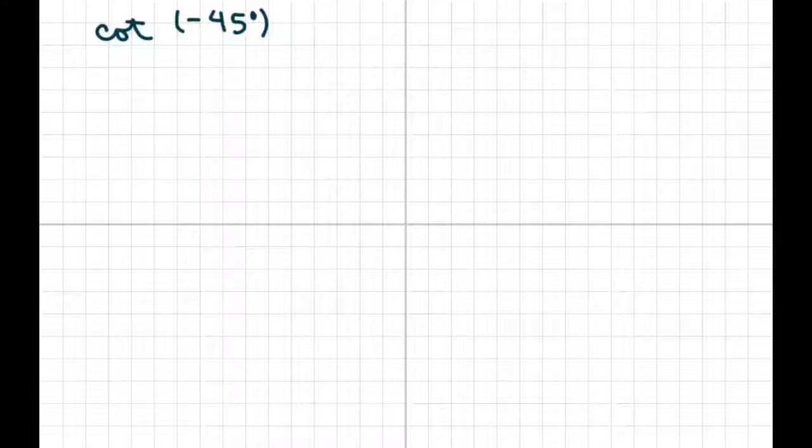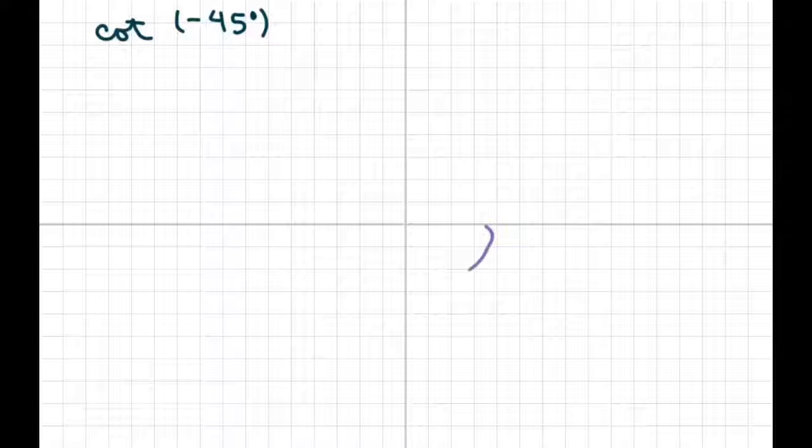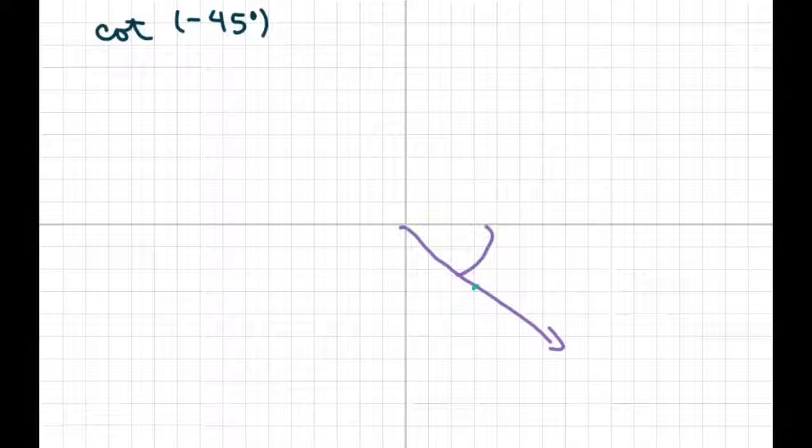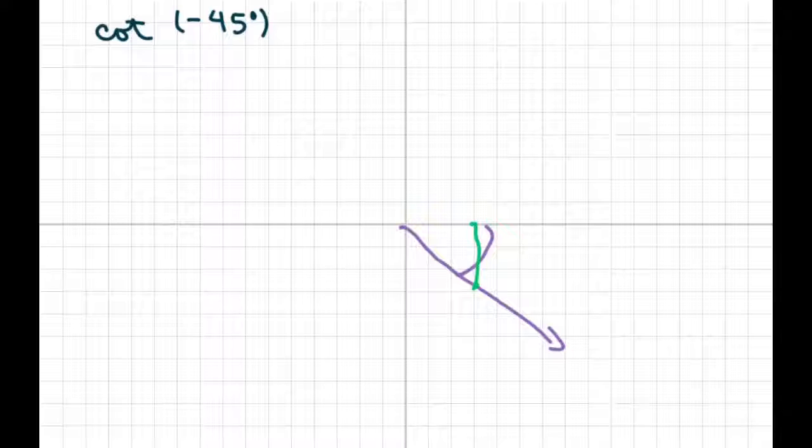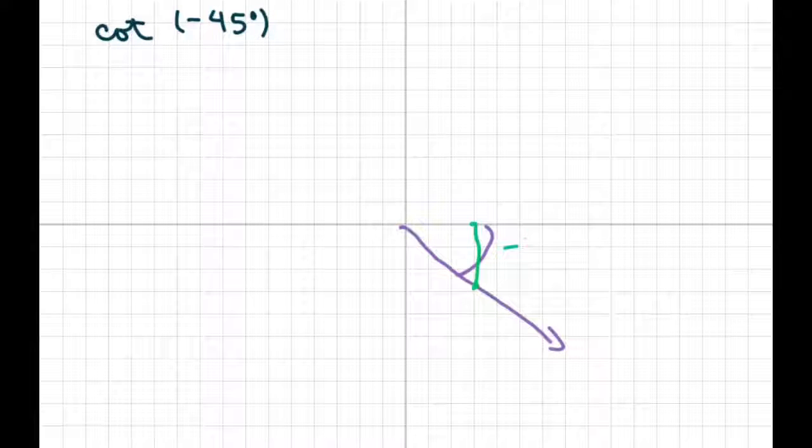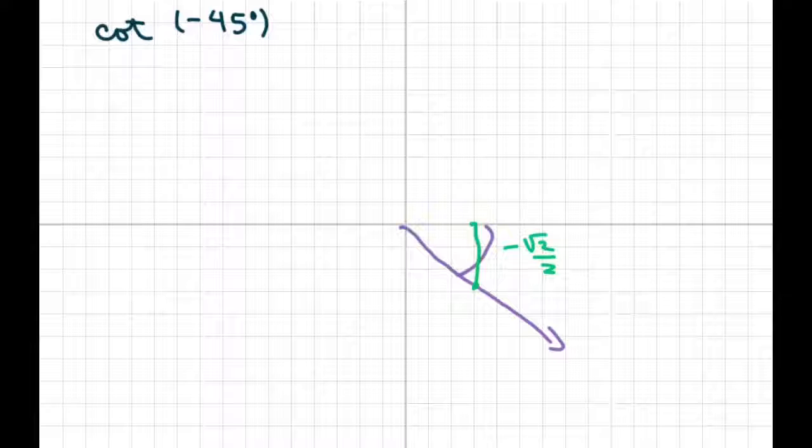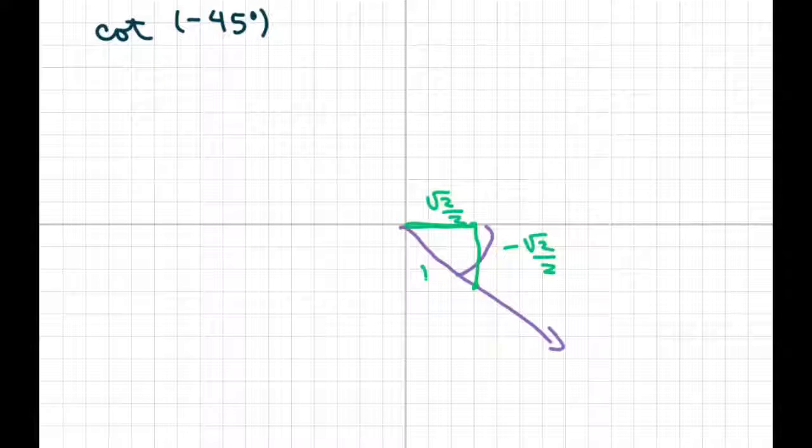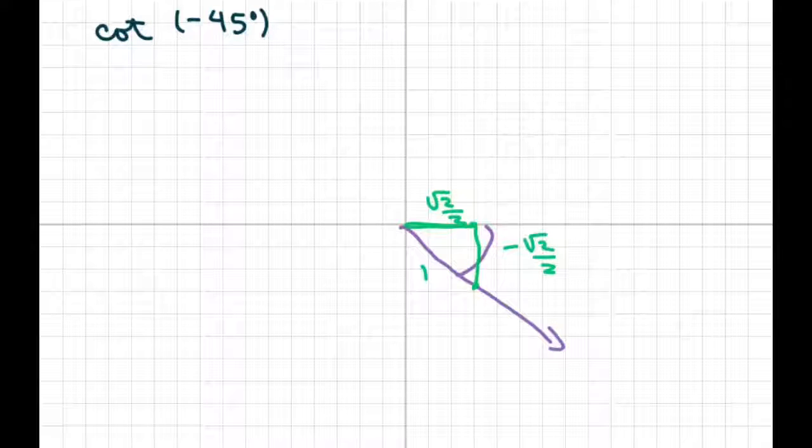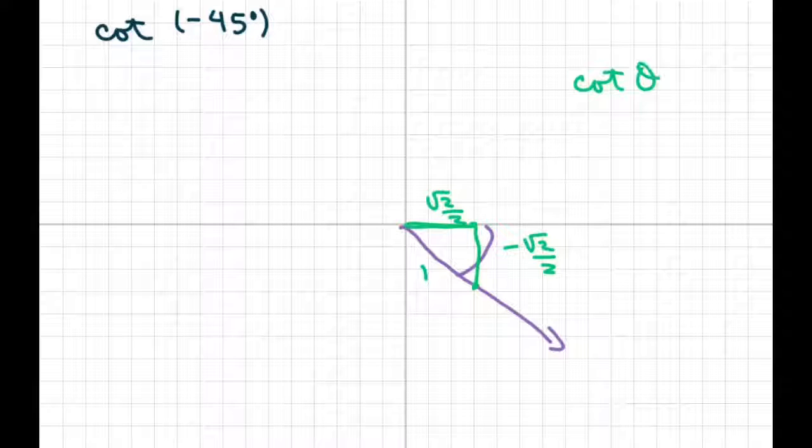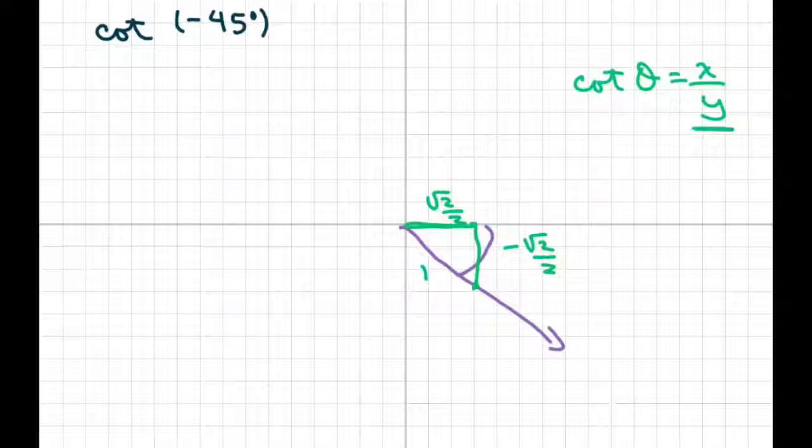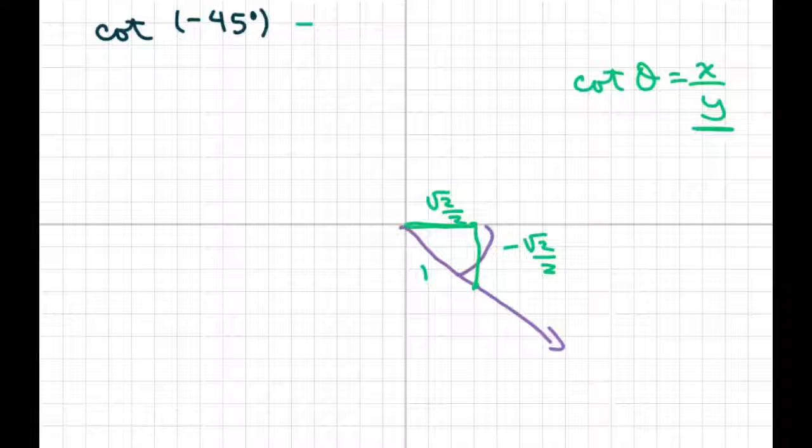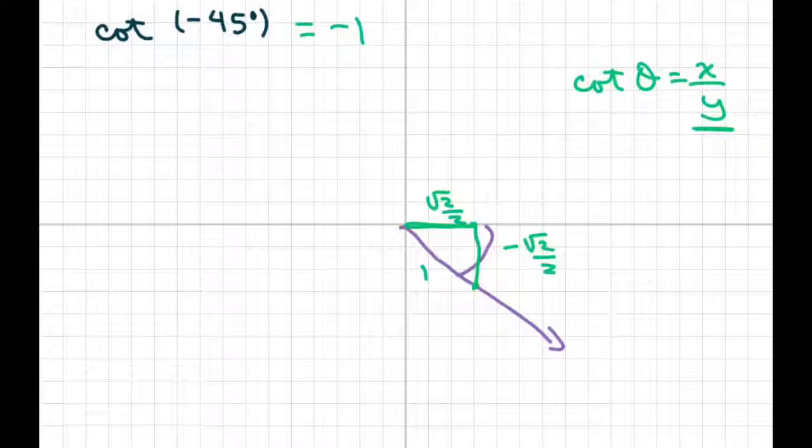And cotan of negative 45. So we're going clockwise here. There's your angle, that's a 45. I'll just draw a triangle here. Basically, you know that your y is negative in quadrant four, but your x here is positive. That's square root of two over two, and this is one. Cotan is x over y. When you divide those two, you're going to get negative one because one's positive, one's negative, and they're the same numbers.